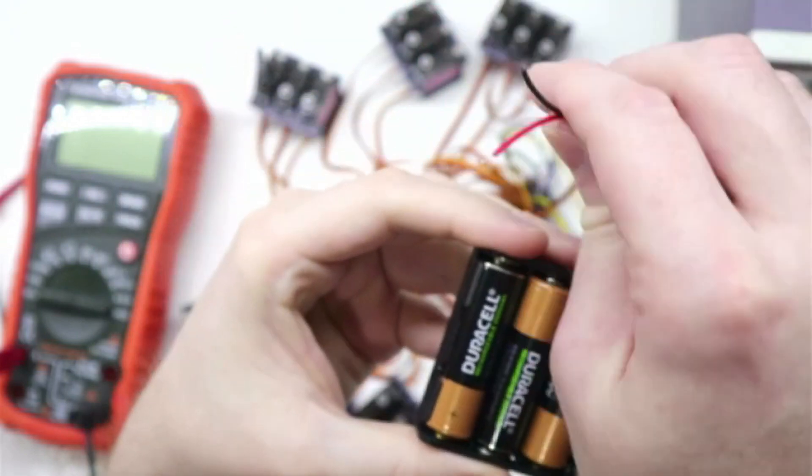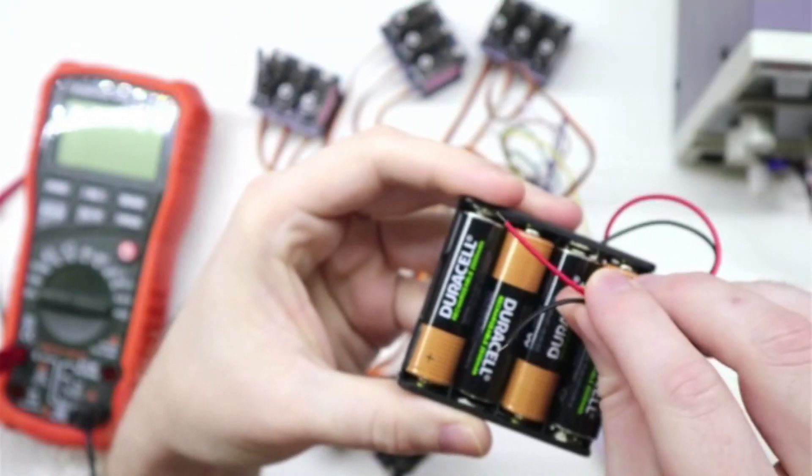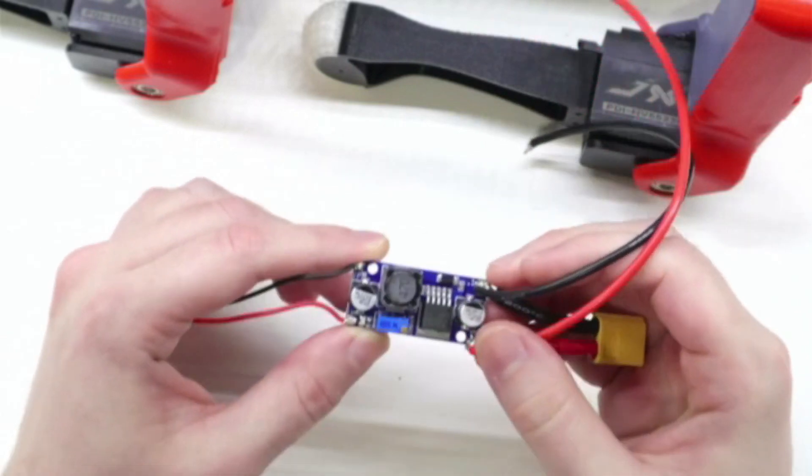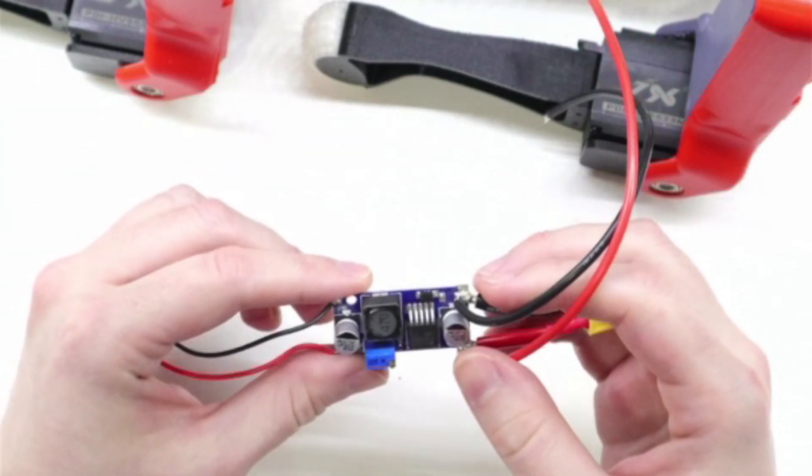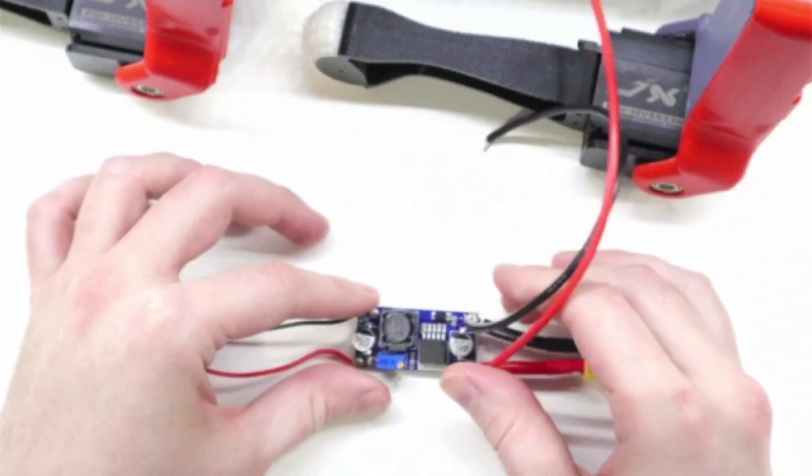However, I'm not sure if I can get enough current from the AA's. My fallback would be to use a buck converter as I did before, however I don't know if I can power all the servos from a single buck converter. We'll find out.